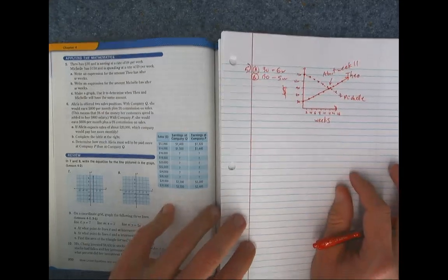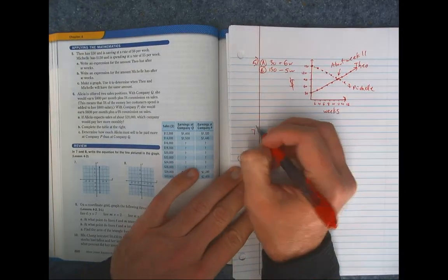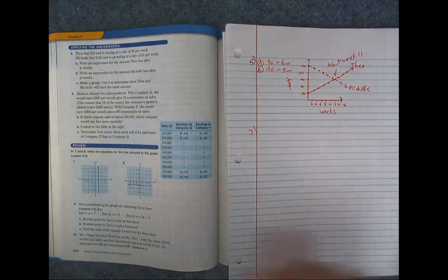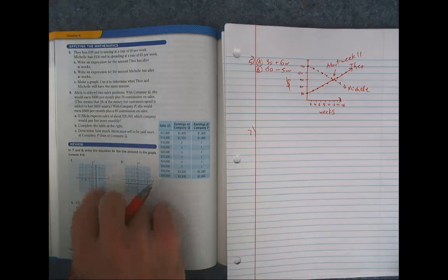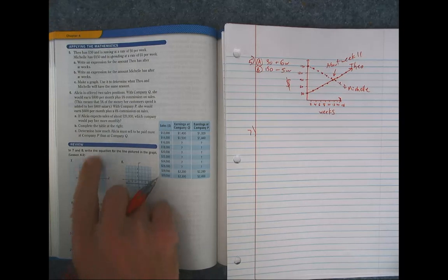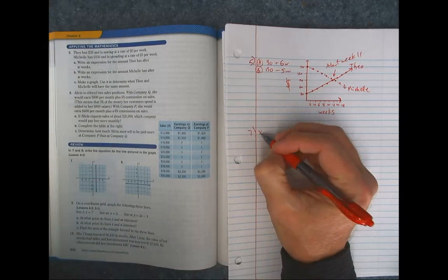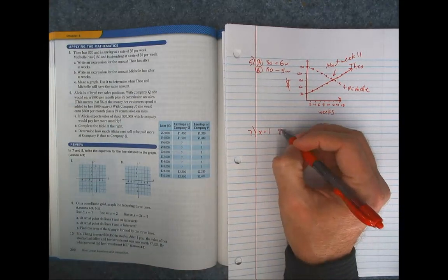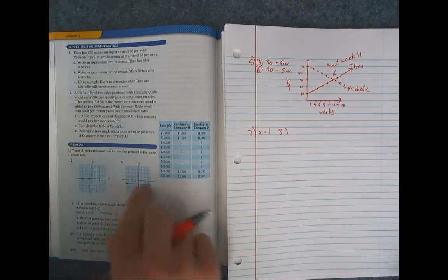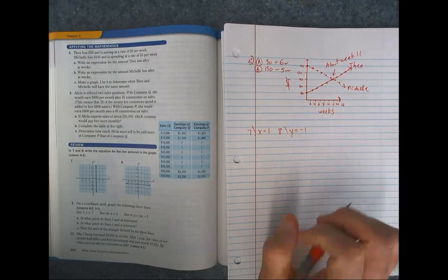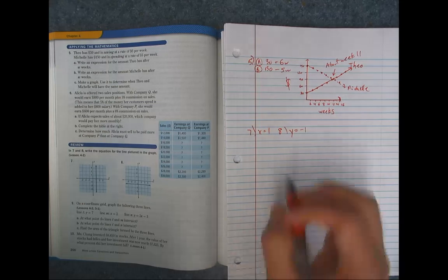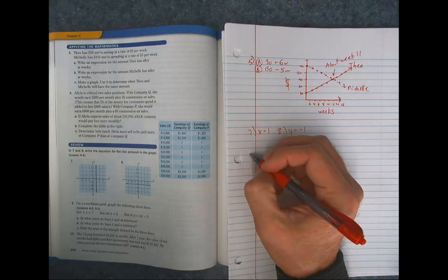All right, that's number five. So next up to the review section, number seven. These will go nice and quick. Write the equation for the line pictured here. So this line right here, the Y value is changing. The X value is always 1. So that's X equals 1. And number eight, right here, the X value changes positive and negative. But the Y value does not change. It's always negative 1. So it's Y equals negative 1.